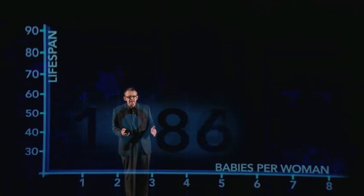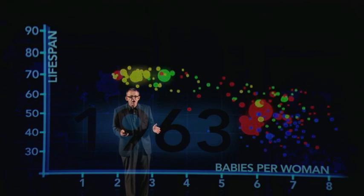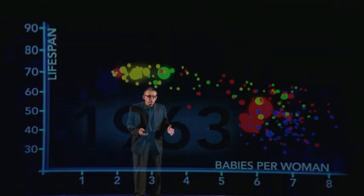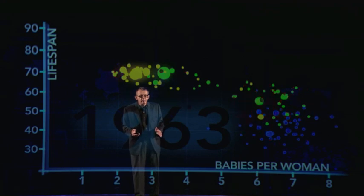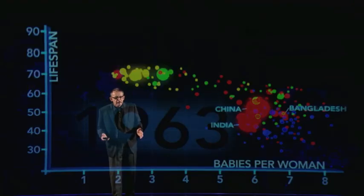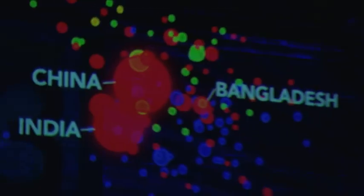I will go back 50 years in time to 1963. Here are all the countries. The green ones are America, north and south. The yellow ones are Europe, east and west. Blue is Africa, north and south of the Sahara. And red is Asia, including Australia and New Zealand. The size of the bubble shows the size of the population. The big ones are China and India, and Bangladesh is just behind.